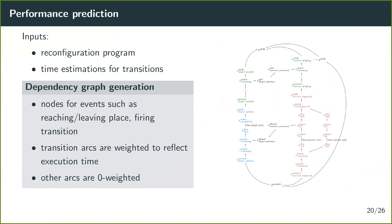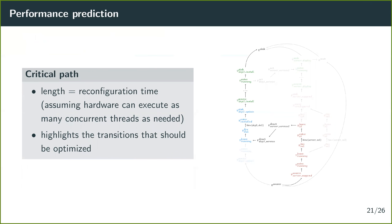The second contribution is predicting the execution time of a Concerto reconfiguration program. The inputs are the reconfiguration program, the set of control components, and the estimated execution time for each transition. The execution of the reconfiguration program is translated into a weighted dependency graph, where arcs representing transitions are weighted with execution times. The predicted execution time is then computed as the critical path — the longest weighted path — through the dependency graph.